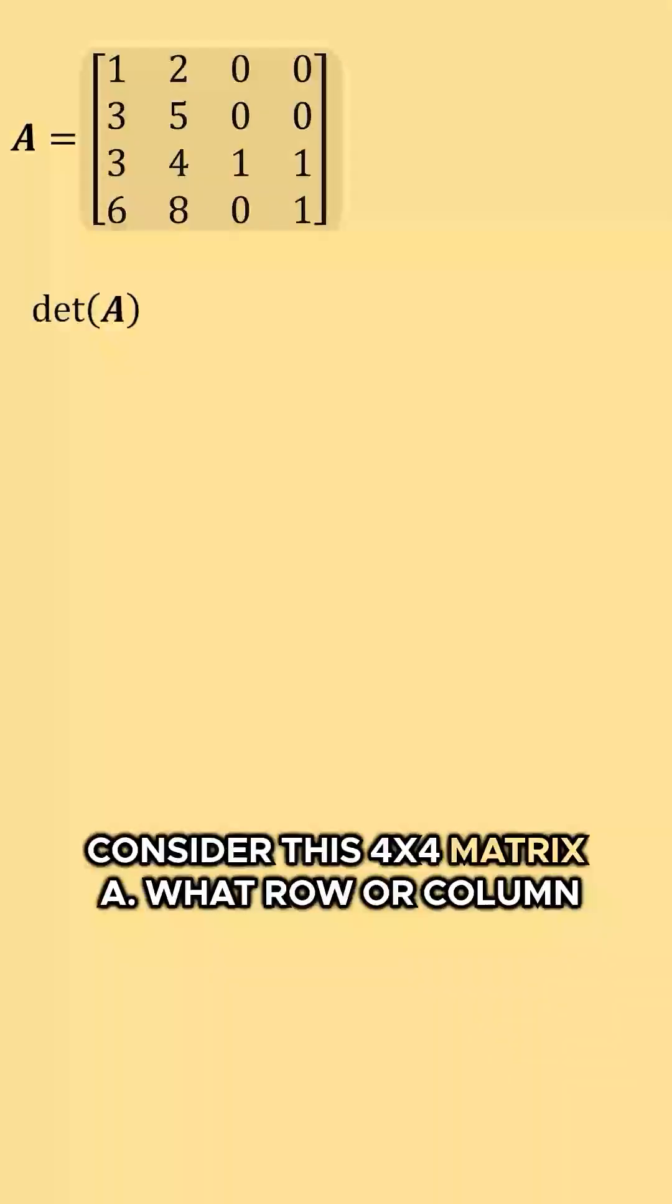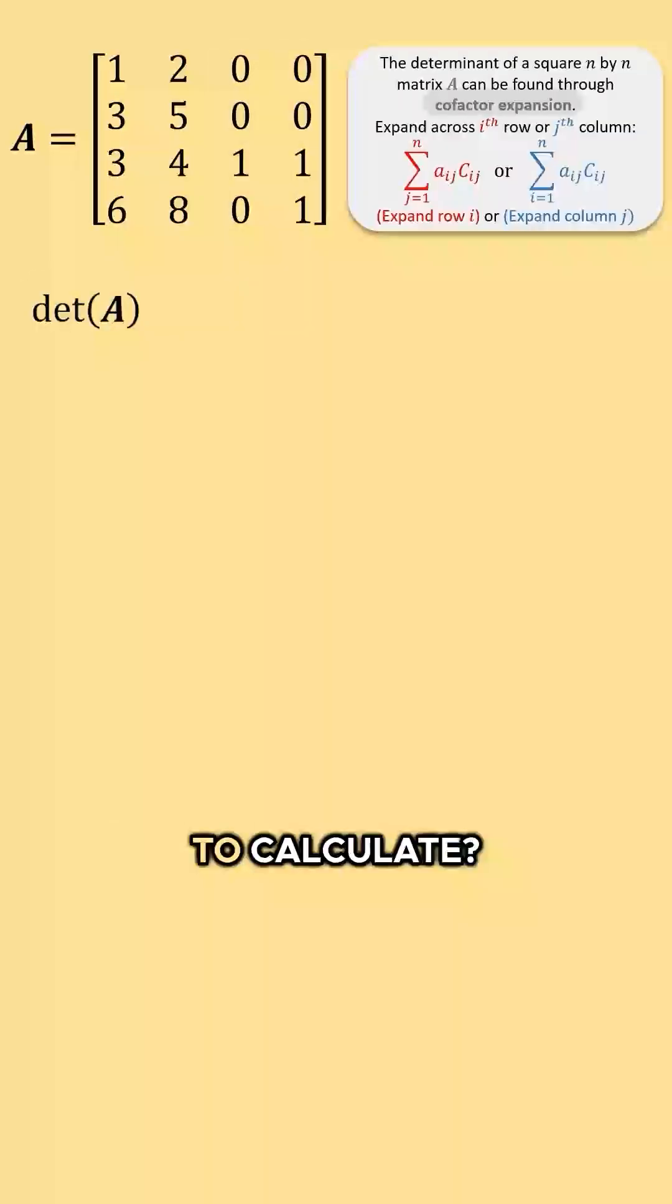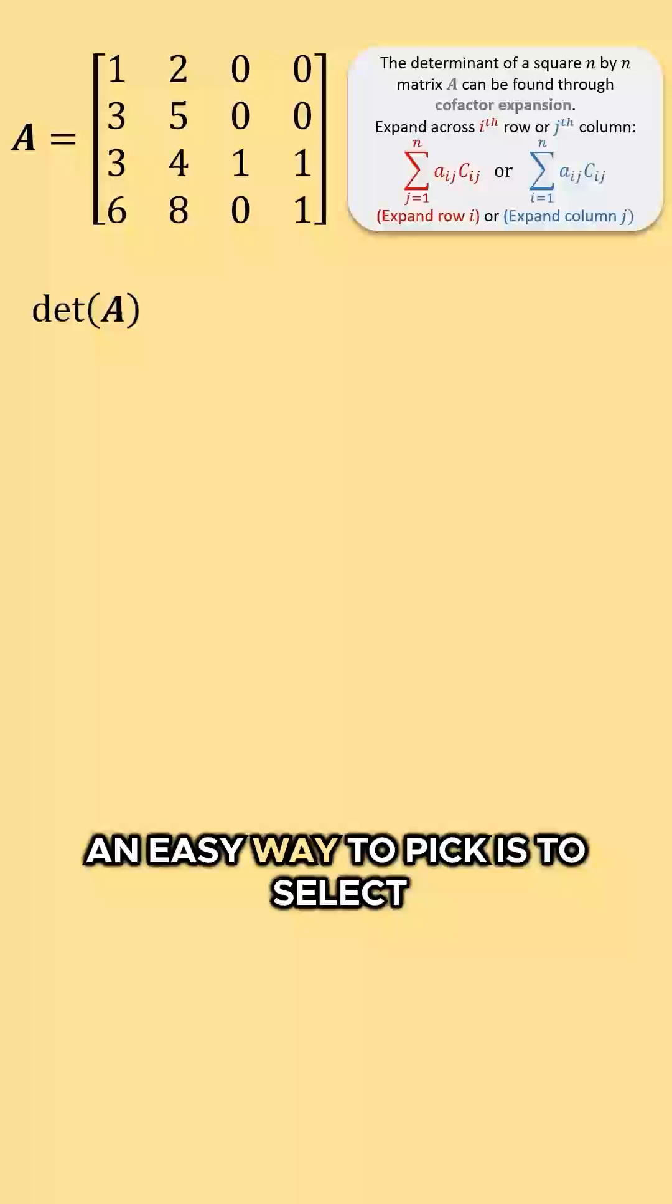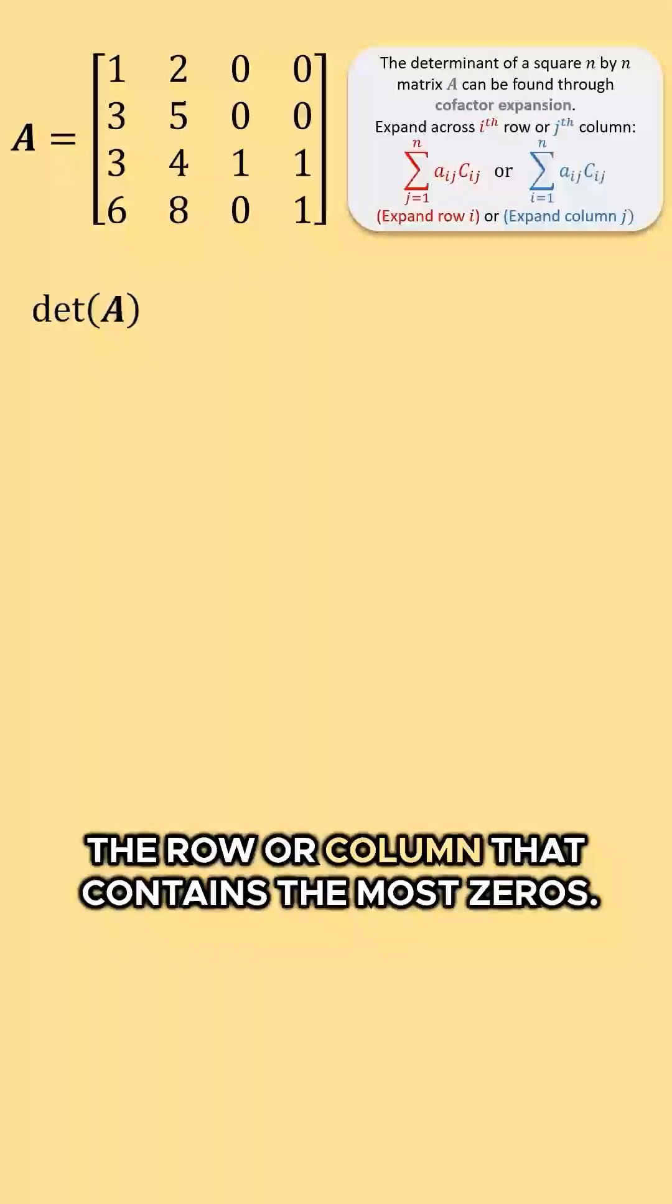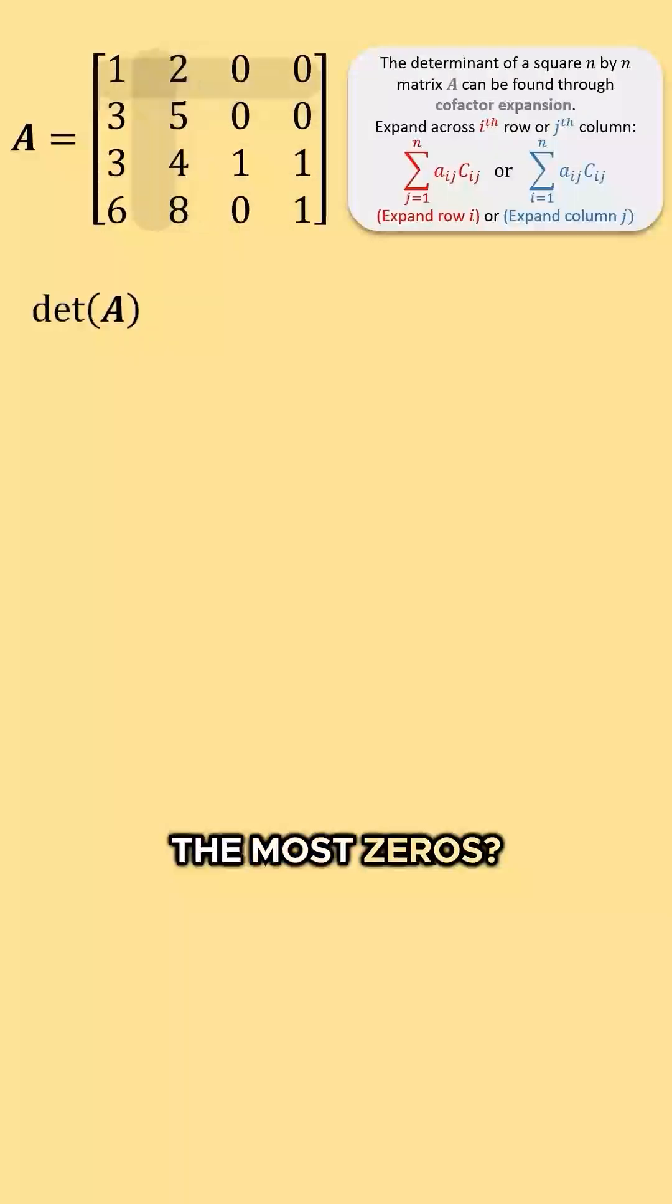Consider this 4x4 matrix A. What row or column will make calculating the determinant through cofactor expansion easy to calculate? An easy way to pick is to select the row or column that contains the most zeros. Which row or column of our matrix has the most zeros?